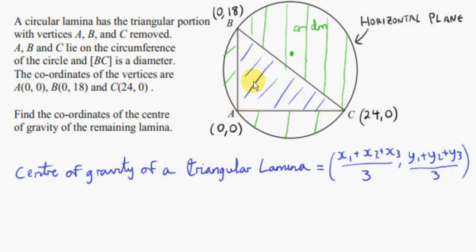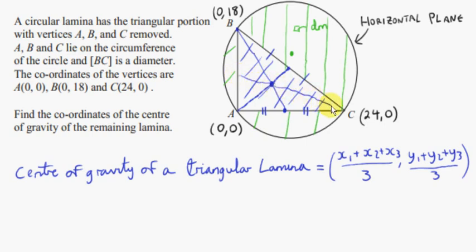Let's look at the triangular lamina. To get the center of gravity, we connect a corner of the triangle to the midpoint of the opposite side — this line is called a median. The center of gravity lies on the median of the triangle. We get a second median by drawing a line from B to the midpoint of the opposite side. Where the two medians meet is the center of gravity of the triangle. The three medians are concurrent, and this point is called the centroid of the triangle.